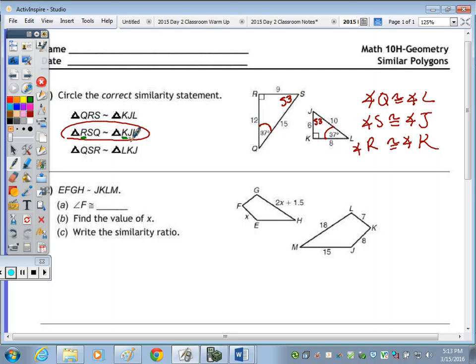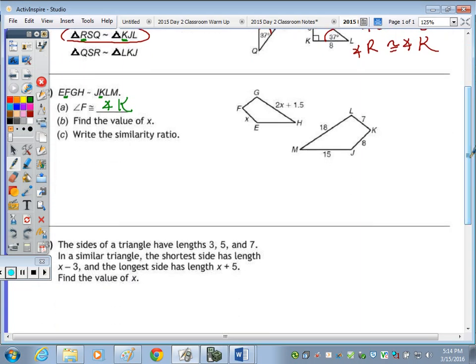And number two, it's given that quadrilateral EFGH is similar to quadrilateral JKLM. So based on the similarity statement, angle F is congruent to angle K. In part B, we have to find the value of X, and X is the length of side FE. And FE, just looking at the similarity statement, FE corresponds to JK.